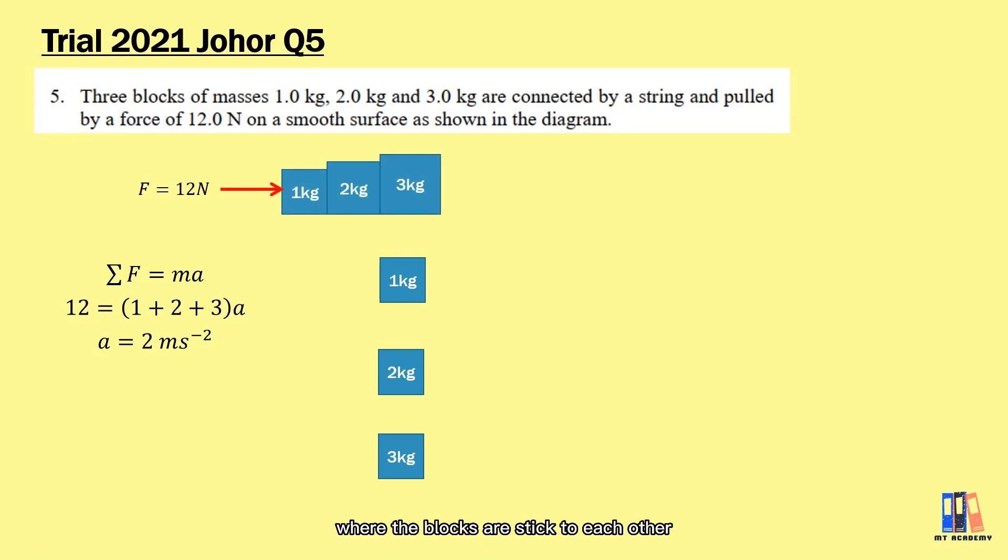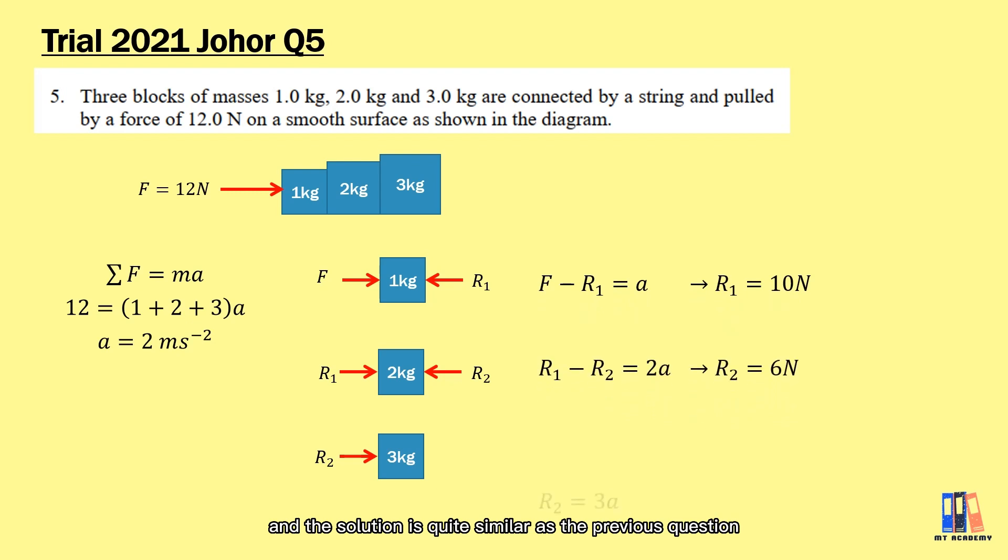Besides the tension in the string, there is also another case where the blocks are stuck to each other. Observe this modified version of the question. It is actually similar except that the blocks are not connected through the pulling force or tension in the string, but the pushing force between each of the blocks. Here the 1 kg mass is pushed by the 12 newton force and it is pushing the 2 kg mass to the right, while experiencing the reaction force also from that 2 kg. At the same time, there is also pushing force and reaction force between the 2 kg and 3 kg mass. The phenomenon here is also related to Newton's third law of motion, and the solution is quite similar to the previous question. I will leave the solution here for you to do your own self-study.